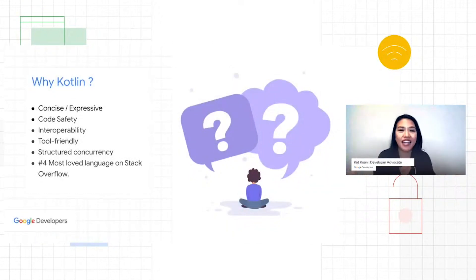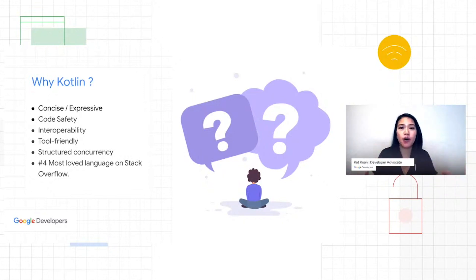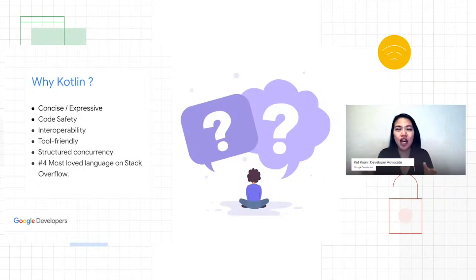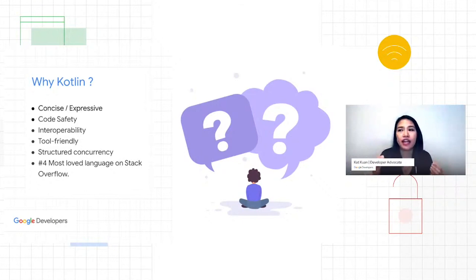So now let's talk about why Kotlin. When we ask developers what they enjoy about Kotlin, there are some top reasons why developers love it. First of all, it's a very expressive language, meaning you can express the concepts you want in your code with very few lines. You'll see an example later where a lot of boilerplate code in Java can be reduced to very few lines of Kotlin code. Type inference helps us become more productive. And with code safety and the type system, it really tries to help you catch your mistakes ahead of time or prevent you from making mistakes in the first place.